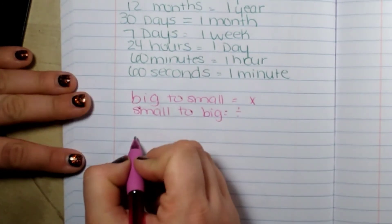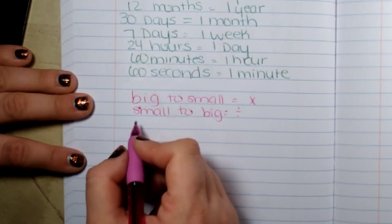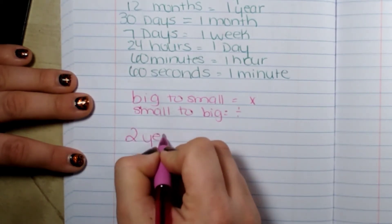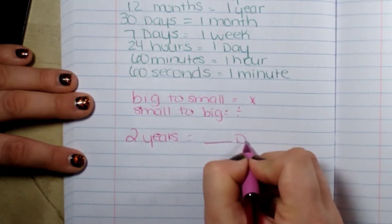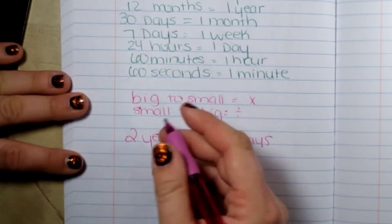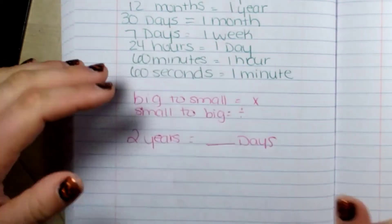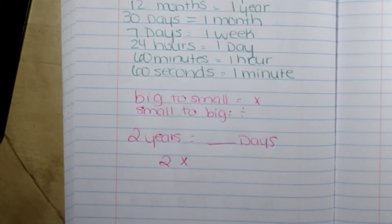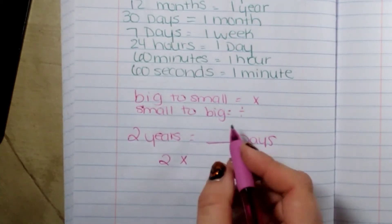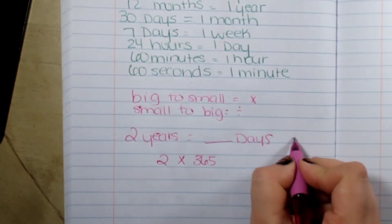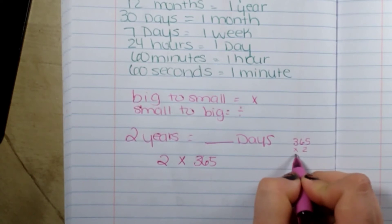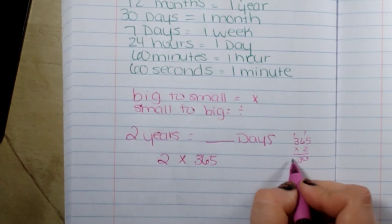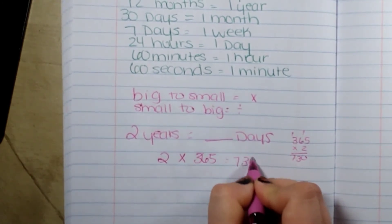So let's do some examples. How many days are in two years? Years are bigger, so we go big to small — we crisscross, that's multiplication. How many days are in one year? 365. So two times 365 equals 730 days.